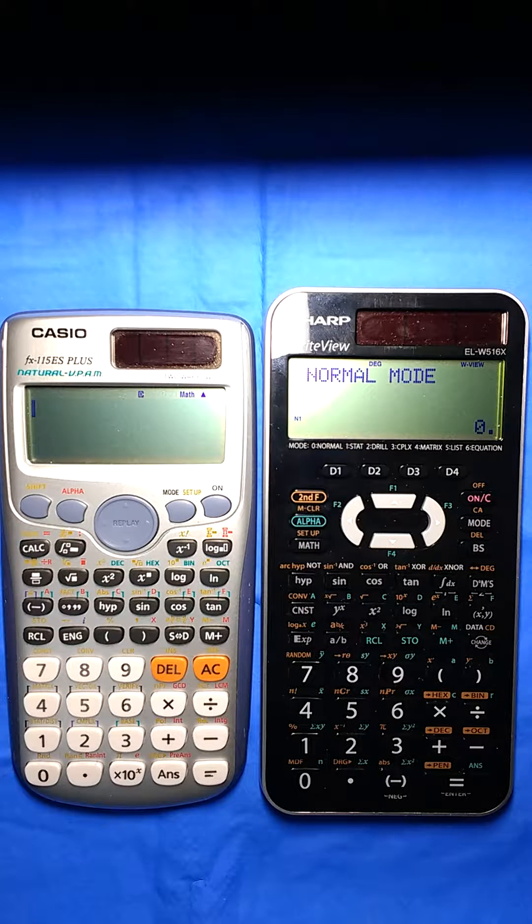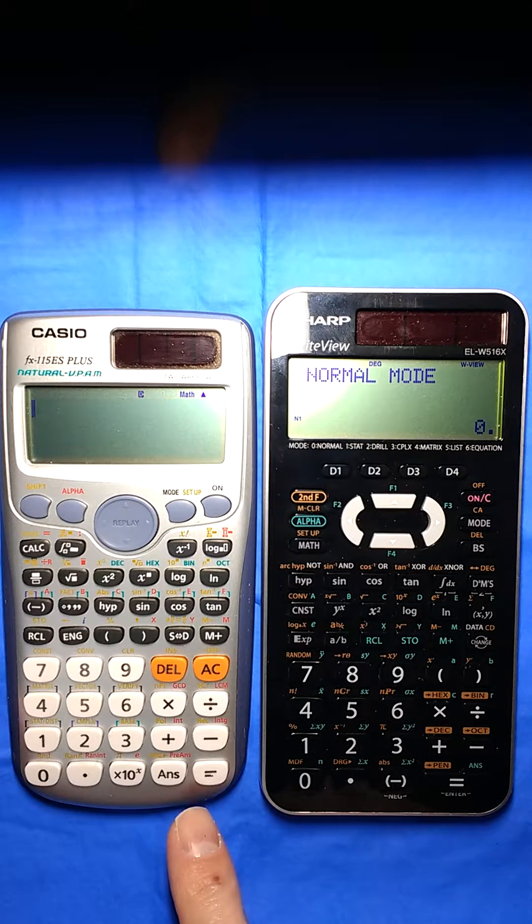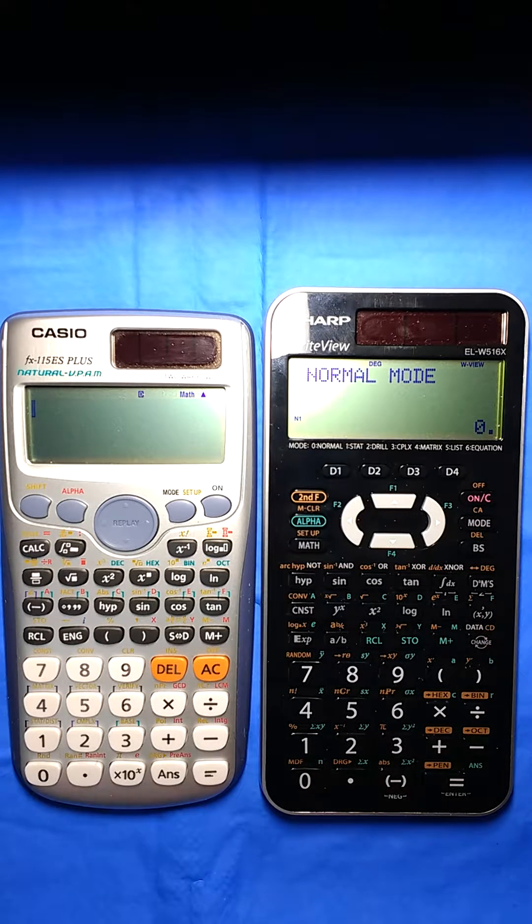If you do a lot of polar coordinates or anything where you're going to use the comma key, is it shifted on the Casio? On the Sharp it is on the main keyboard.